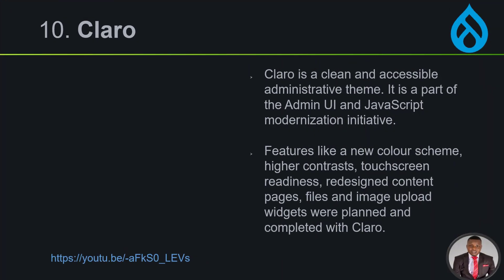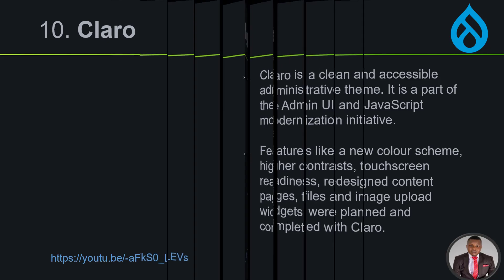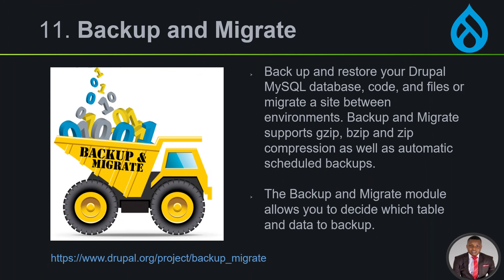The next is Claro. This is not a module but a theme — it's related to the recent theme for Drupal 9. Claro is a clean and accessible administrative theme that is part of the admin UI, with JavaScript modifications and features like a new color scheme, higher contrast, and screen reader readiness. It offers a lot and we're going to use it in this course.